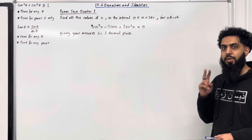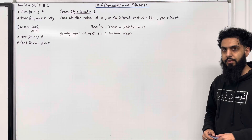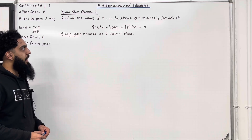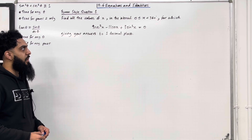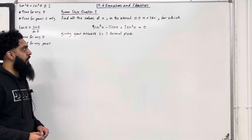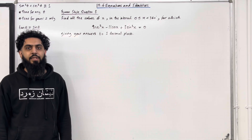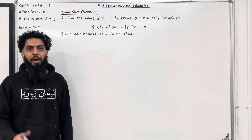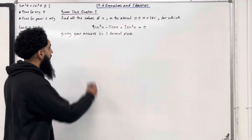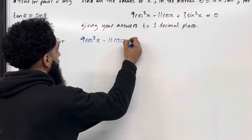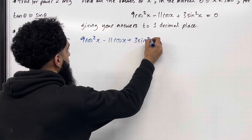I'll be implementing these key facts within two exam style questions. Let's have a look at exam style question 1: find all the values of x in the interval 0° ≤ x < 360° for which 9cos²x − 11cos x + 3sin²x = 0, giving your answers to one decimal place. I'm going to start by writing the trigonometric equation: 9cos²x − 11cos x + 3sin²x = 0.